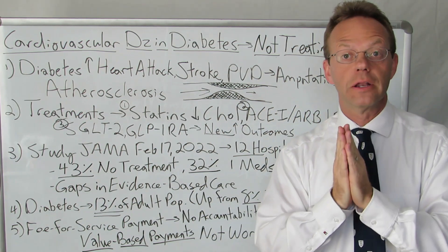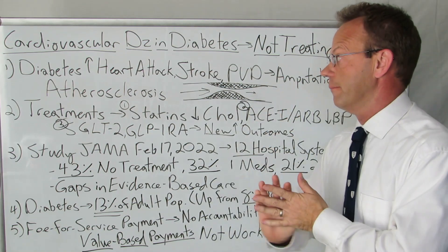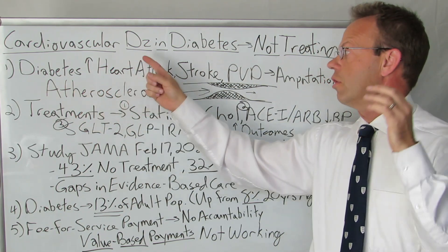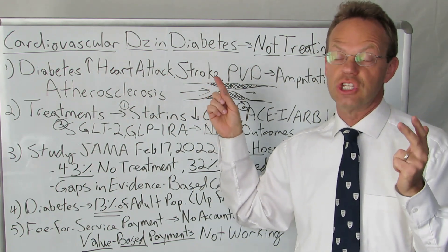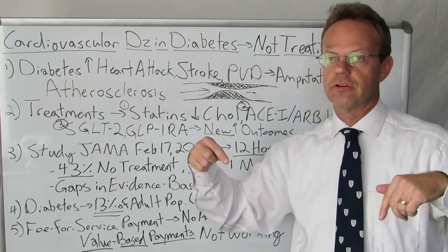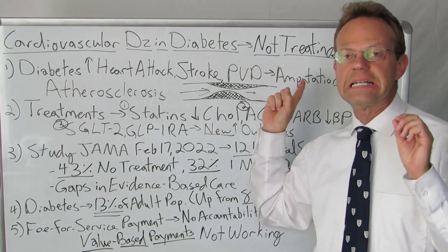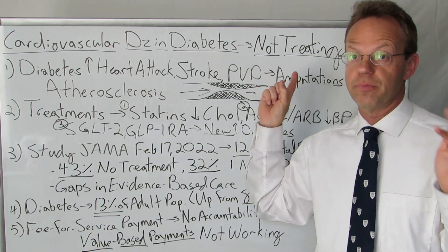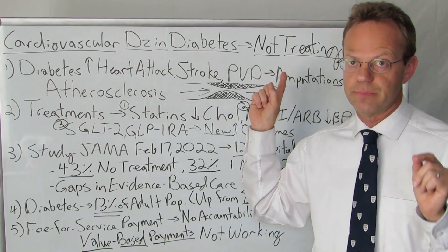I have to go over a little pathophysiology about cardiovascular disease to start. In diabetes there is an increased risk of heart attack, stroke, and peripheral vascular disease. Peripheral vascular disease is damage to the small arteries, especially in your feet — somewhat in your hands but mostly in your feet. The real problem with peripheral vascular disease is it leads to non-healing foot wounds and ulcers and amputations.